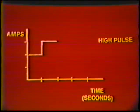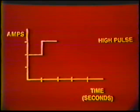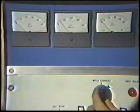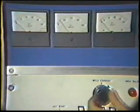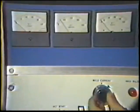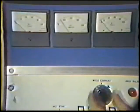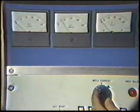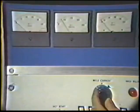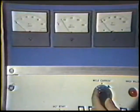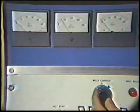The high pulse current is the level at which melting and fusion take place, and is normally adjusted slightly higher than would be required with steady current for equivalent material thicknesses. For example, stainless steel applications that normally require 35 to 40 amps would require about 50 to 60 amps for pulsed current.